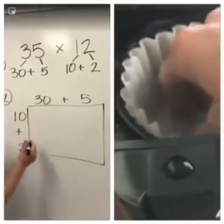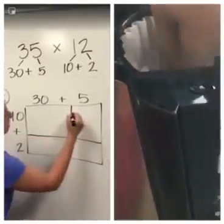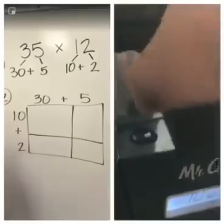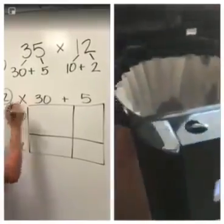Where your plus signs are, I want you to draw lines through the middle and down it. And then in the very corner, we're still multiplying, so I'm going to put a big multiplication sign.